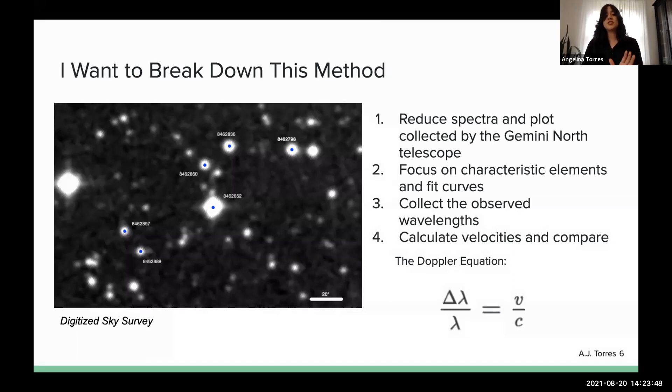We have a four-step method to making this possible. On the left here, we have an image taken by the Digitized Sky Survey. In the center, we have Tabby's star. Tabby's star is surrounded by five nearby bright stars. Using the Gemini North Telescope, we've collected spectra of all six of these stars. We can reduce these spectra into a form of wavelength versus normalized flux and focus on elements that are characteristic to the clouds passing in front of the stars.